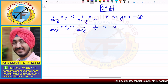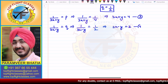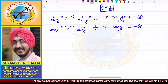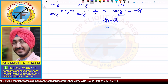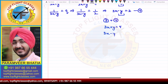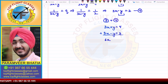Similarly, 1 by (3x − y) equals q equals 1 by 2. This implies 3x − y equals 2. This is our fourth equation.